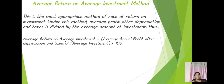Average return on average investment method — this is the most appropriate method of rate of return on investment. Under this method, average profit after depreciation and tax is divided by the average amount of investment. The formula is: Average Return on Average Investment = Average Annual Profit after Depreciation and Tax divided by Average Investment, into 100.